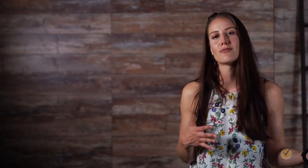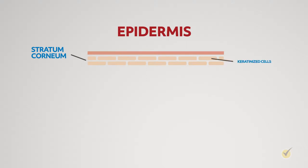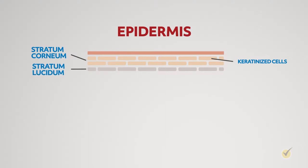The epidermis is further divided into four or five layers, depending on its location on the body. The outermost layer, called the stratum corneum, is made up of dried keratinized cells that eventually slough off and are replaced by cells in the layer beneath it. In the palms of hands and soles of the feet, the layer that follows is a clear, thin, translucent layer called the stratum lucidum.